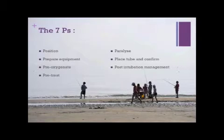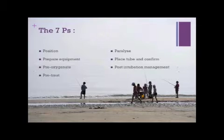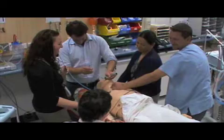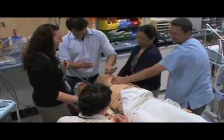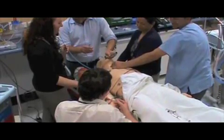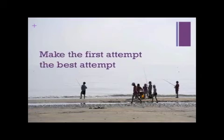A commonly described method of preparation is the seven P's. They are: position, prepare equipment and drugs, pre-oxygenate, pre-treat, paralyze, place the tube and confirm its position, and post-intubation management. Ensuring attention is allocated to each of these stages prior to induction can help to reduce the chance of something going wrong. Each situation is different and will require specific adaptations, and the amount of preparation will depend on the urgency of the situation. The aim should always be to make the first attempt at intubation the best one.